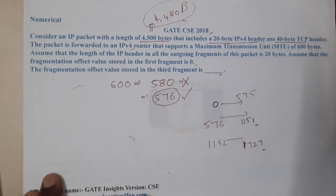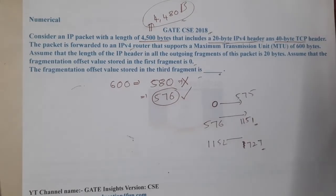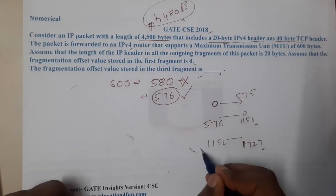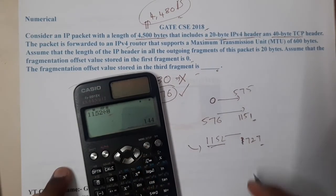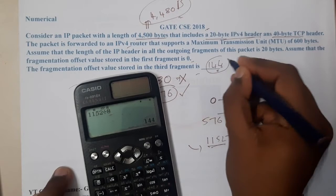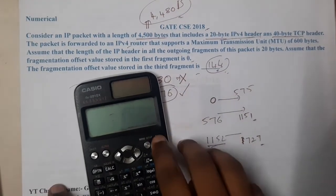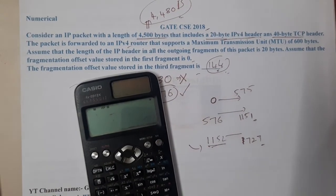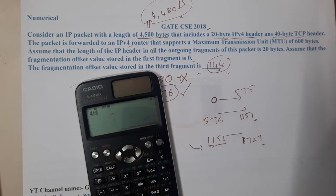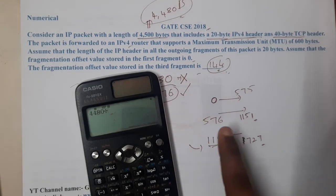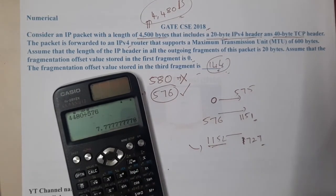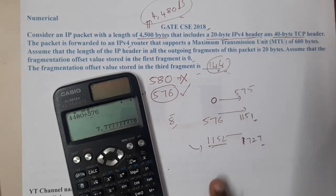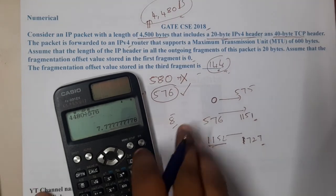The question asks for the offset of the third fragment. It is 1152 / 8 = 144. So the fragment offset of the third packet is 144. Additionally, the total number of packets required is 4480 / 576 ≈ 7.77, so a minimum of 8 packets are needed to transfer all the data.